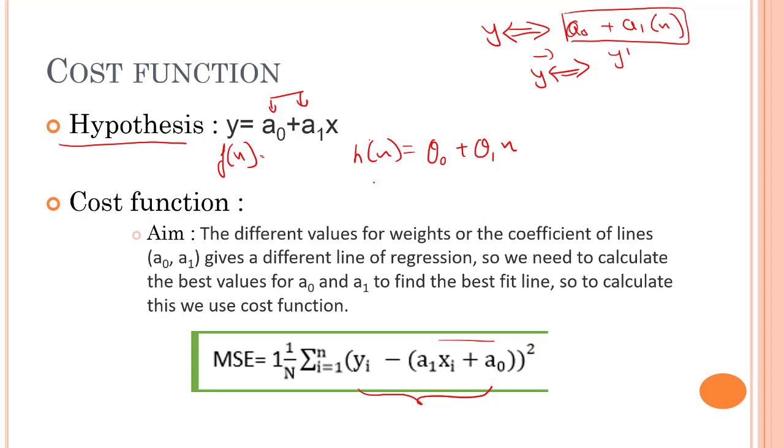When working with your linear regression model, our main goal is to find the best fit line. That means the error between the predicted value and the actual value should be minimized. The best fit line will have the least error. The different values for weights or the coefficient of lines gives a different line of regression. So, we need to calculate the best values for a0 and a1 to find the best fit line, so to calculate this, we use the cost function.